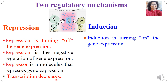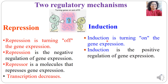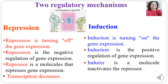Induction, on the other hand, is turning on gene expression — it is the positive regulation of gene expression. An inducer is a molecule that inactivates the repressor. When the inducer inactivates the repressor, transcription increases. This is how the two regulatory mechanisms work to regulate gene expression.